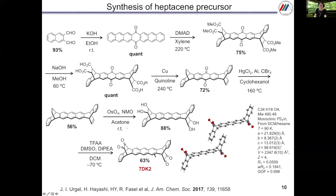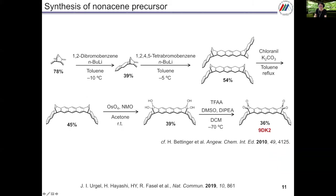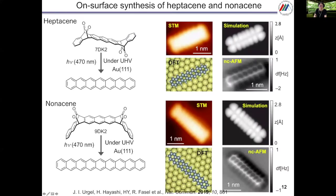Independently, we also made the precursor of heptacene, 7DK2. This is the single crystal structure of 7DK2. We can isolate the anti-type isomers. We also prepared 9DK2, using almost the same synthetic scheme as Professor Bettinger's group, but the final oxidation condition is different: we use Swern oxidation and they use Tempo as the oxidant. Using 7DK2 and 9DK2, Professor Fasel's group successfully measured the heptacene and nonacene images. These are the STM and non-contact AFM images of heptacene and nonacene.